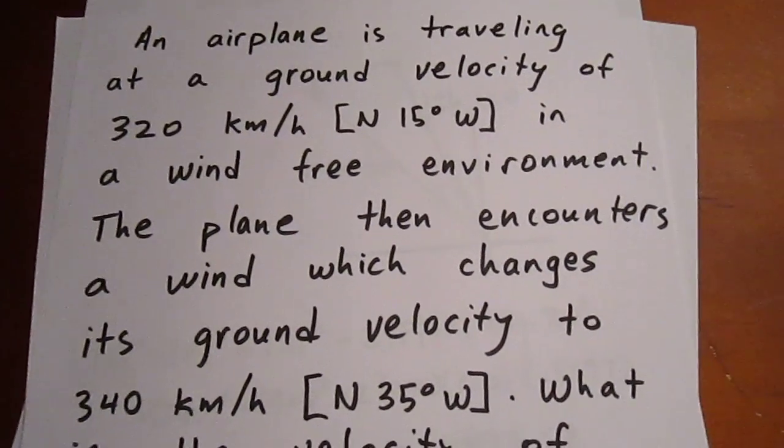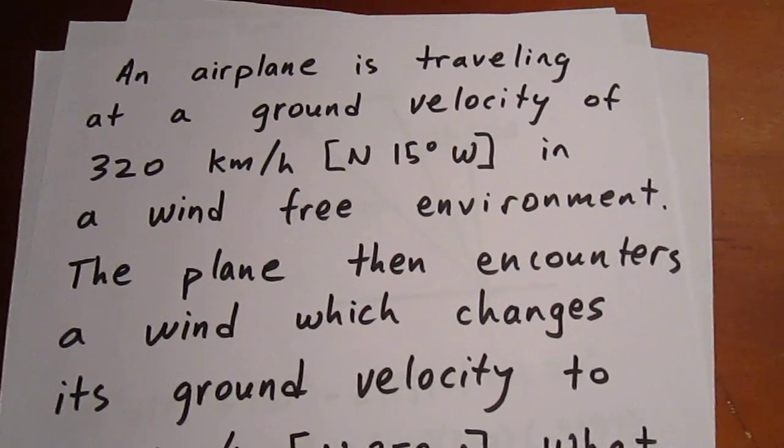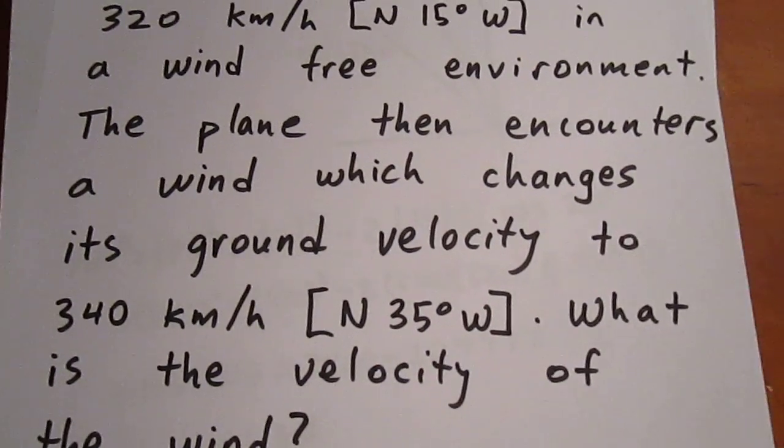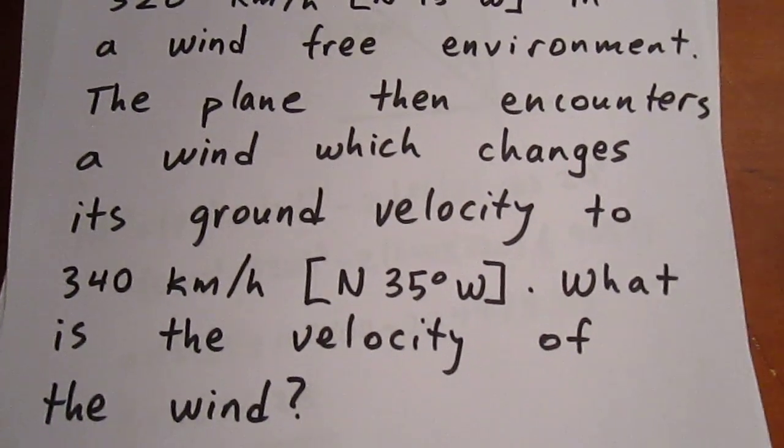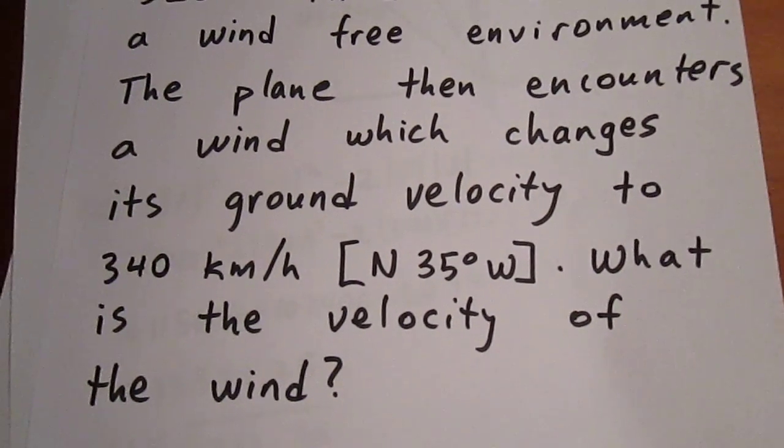In this question, we have an airplane traveling at a ground velocity of 320 kilometers an hour in a direction north 15 degrees west in a wind-free environment. The plane then encounters a wind which changes its ground velocity. We want to know the velocity of the wind.